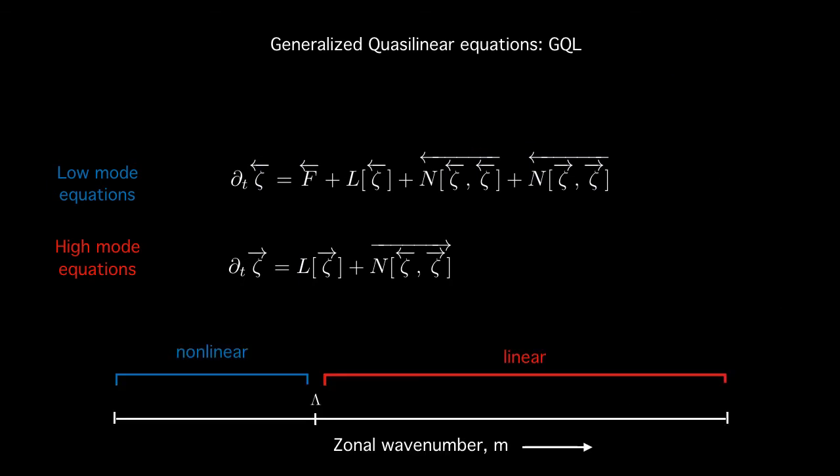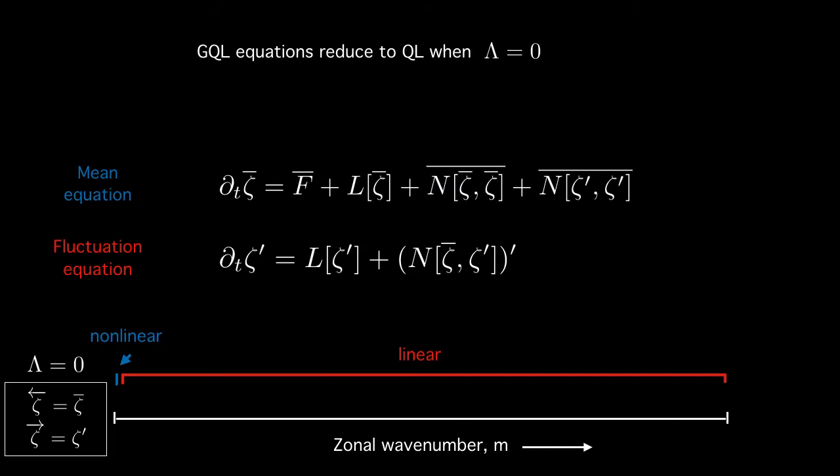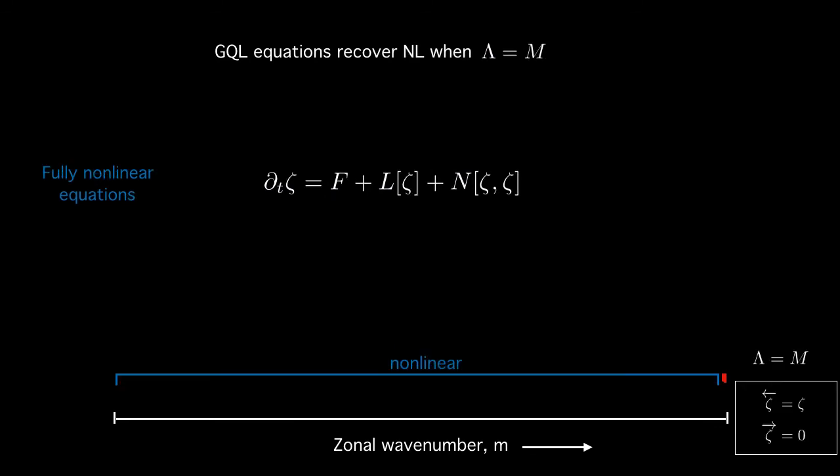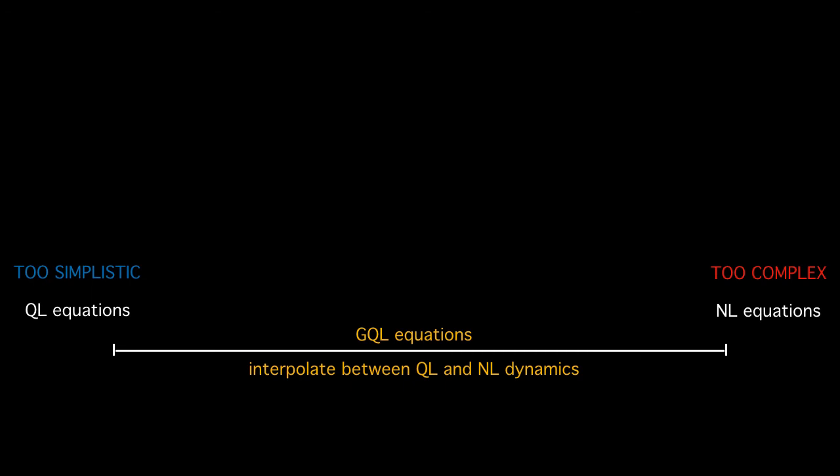So we can think of GQL as follows. There's a spectrum of zonal wave numbers and all low modes with wave number less than lambda are described by non-linear equations and the remaining high modes are formally linear. Now interestingly GQL reduces to QL when lambda is zero. When lambda is zero the projection becomes the mean operation and only the mean equation is non-linear. And on the other end when the cutoff is the full wave zonal resolution then all equations are non-linear. So we recover the NL. All right so we've improved on the picture we had earlier. We had QL on one side and NL on the other and we obtained GQL equations which have the potential to interpolate between QL and NL.